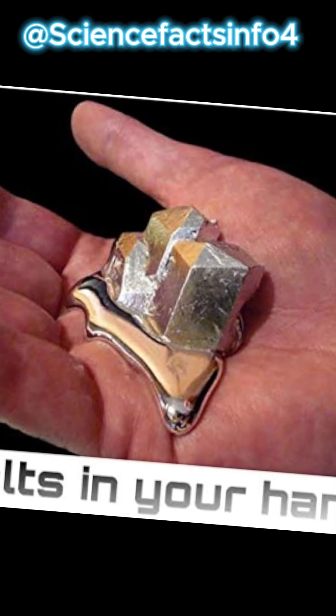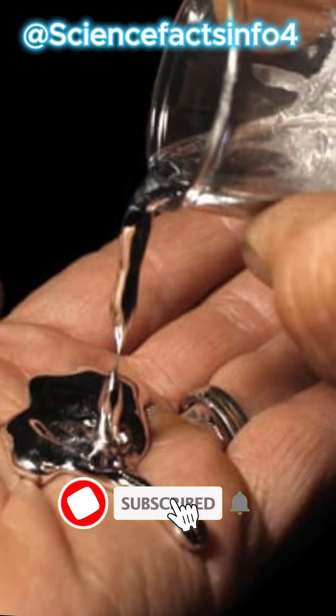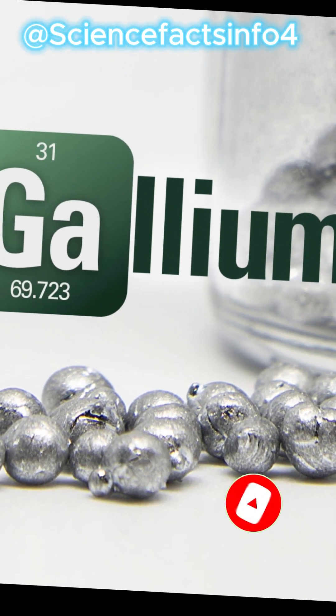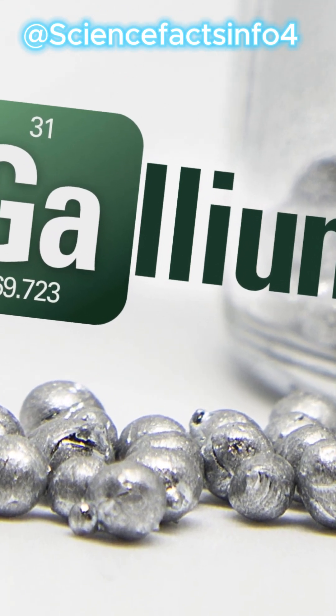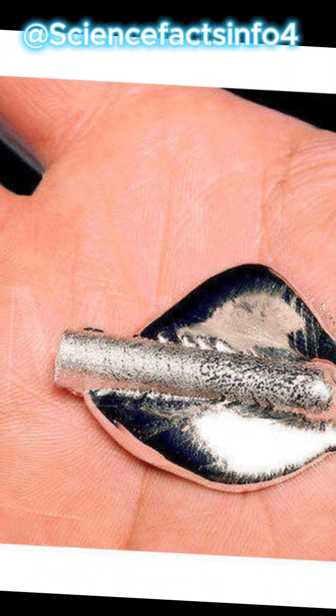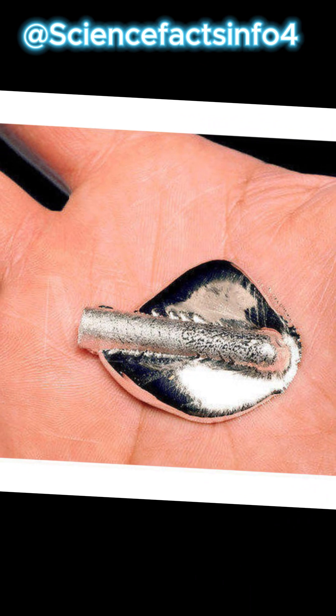Gallium has a melting point of just 29.76 degrees Celsius (85.57 degrees Fahrenheit), meaning it melts at body temperature. If you place it on your palm, it slowly turns into a liquid, almost like mercury but completely non-toxic.